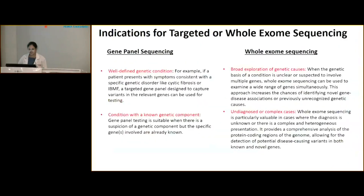Indications for targeted sequencing: the genetic condition should be well-defined, such as cystic fibrosis where only one gene is involved. For whole exome sequencing, indications include unclear conditions suspected to involve multiple genes, and undiagnosed or complex cases.